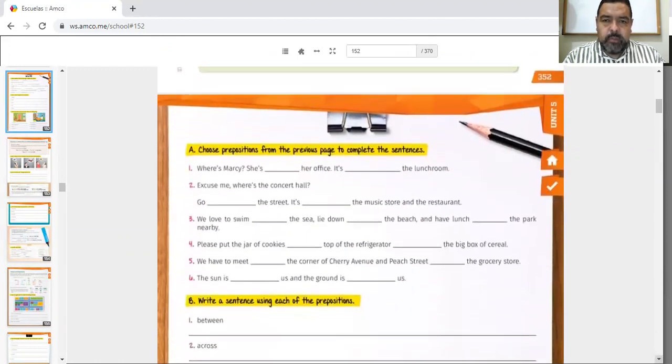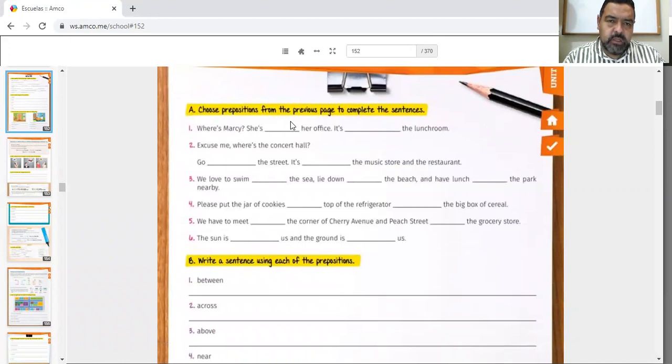Now you're required to complete this exercise right here. Choose prepositions from the previous page to complete the sentences. So from the previous page, the prepositions I just taught you. Where's Mary? Where's Marcy? She's in her office. Well, I'm going to help you with this one. She's in her office. Now, since that's a public place, you can also say she's in her office or at her office because it's a public place. It's in the lunchroom or at the lunchroom. Now, es un espacio de entre. So we have to say, she is in the lunch room.